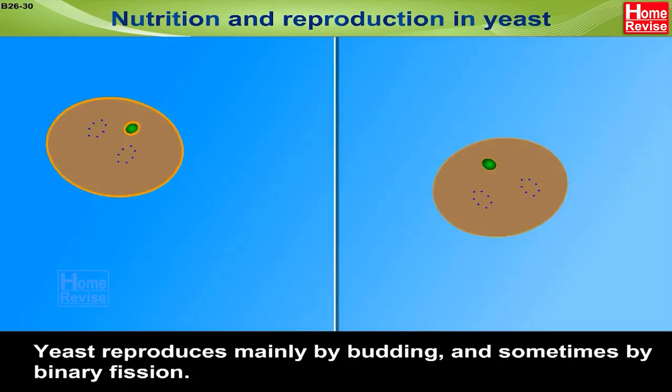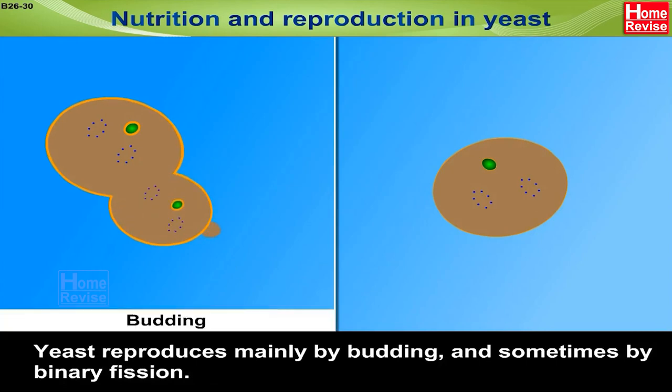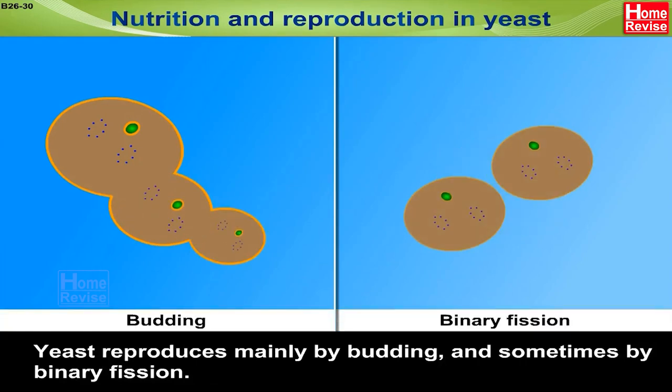Yeast reproduces mainly by budding and sometimes by binary fission.